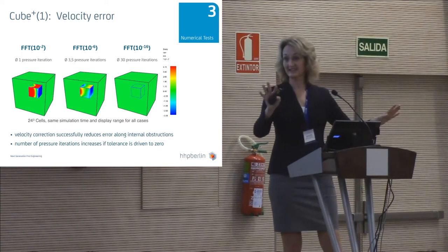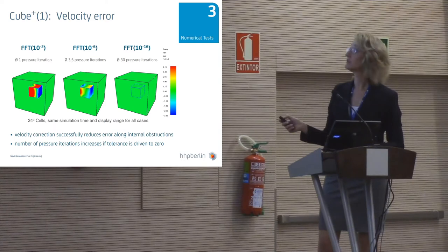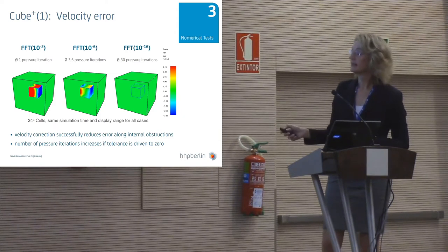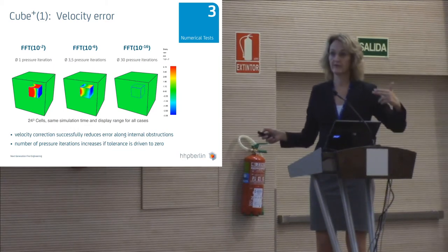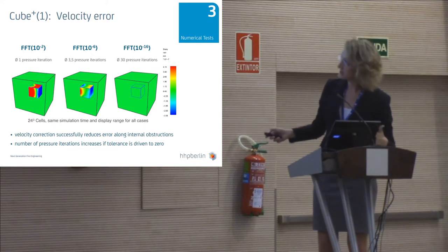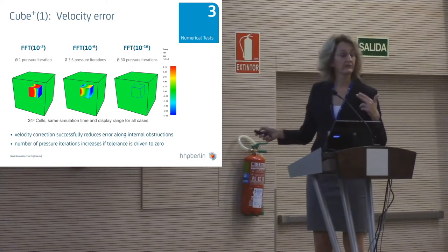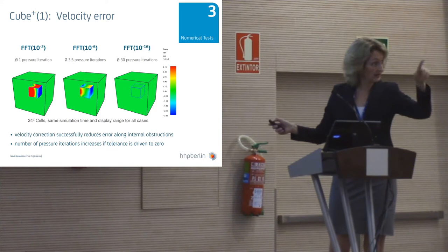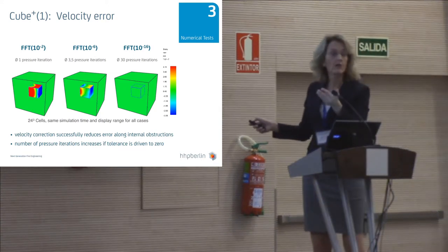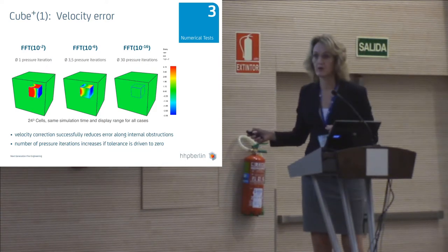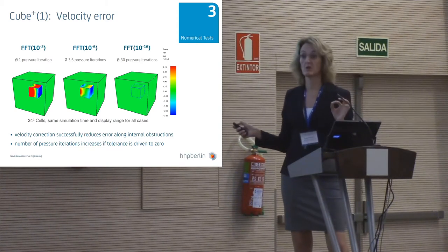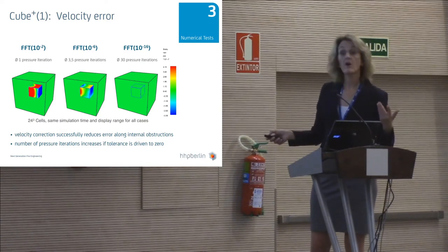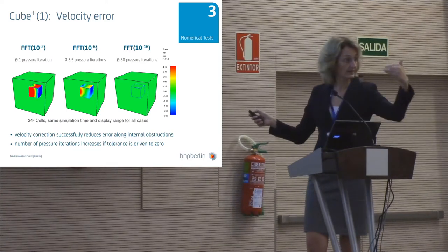For one moment, forget the mesh decomposition. This slide shows the velocity error for cube-plus — namely with obstruction — for one single mesh in case of the FFT. If we only perform one local cycle of FFT methods on this relatively coarse grid resolution, we end with a velocity error of 10 to the minus 2. If we want a smaller velocity error along the internal obstruction, we have to do 3 or 4 FFT cycles. And if we really want a zero error along the internal obstruction, we need 30 pressure iterations to reach this tolerance.